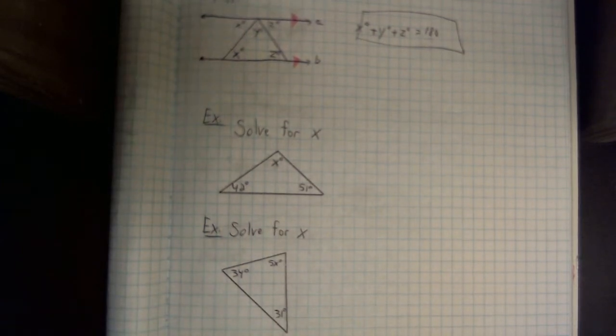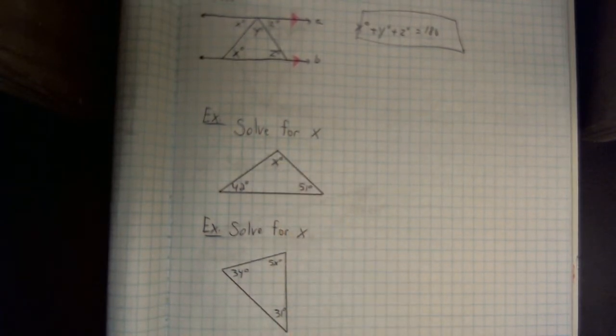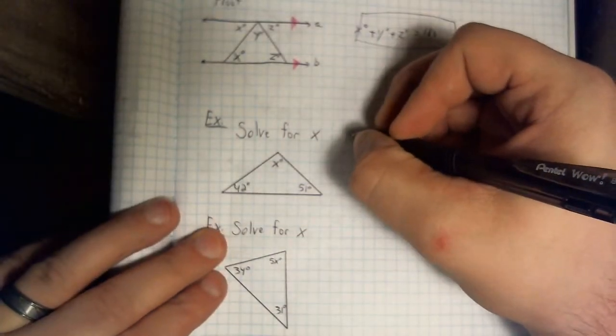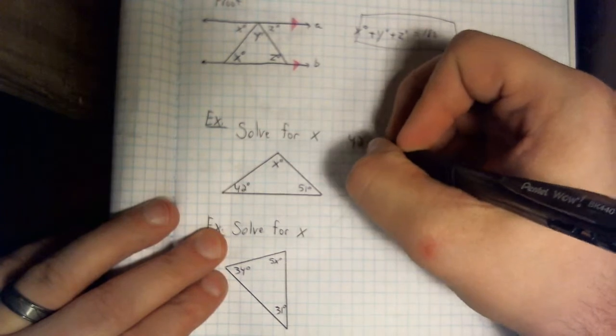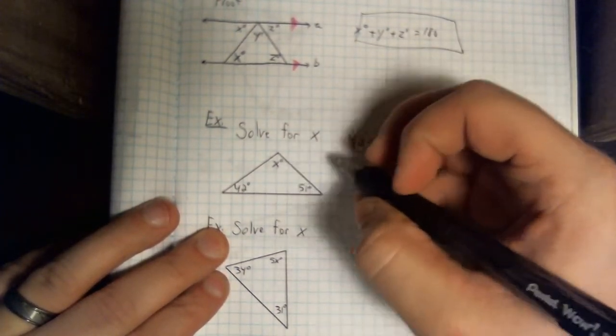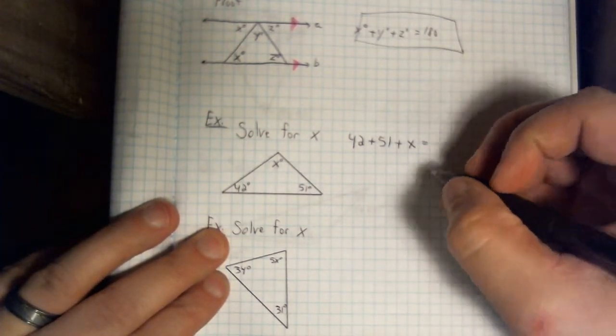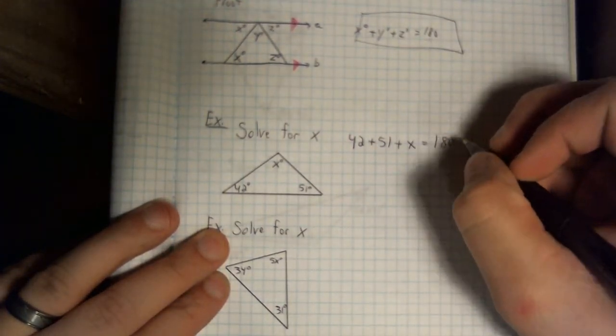Here we see a triangle. It has 42 degrees, 51 degrees given, but we're trying to figure out how much this last angle is. Well, we know that if we add 42 degrees, 51 degrees, and this mystery angle, no matter what, they're still going to add to 180. So I'm going to have these equal to 180.